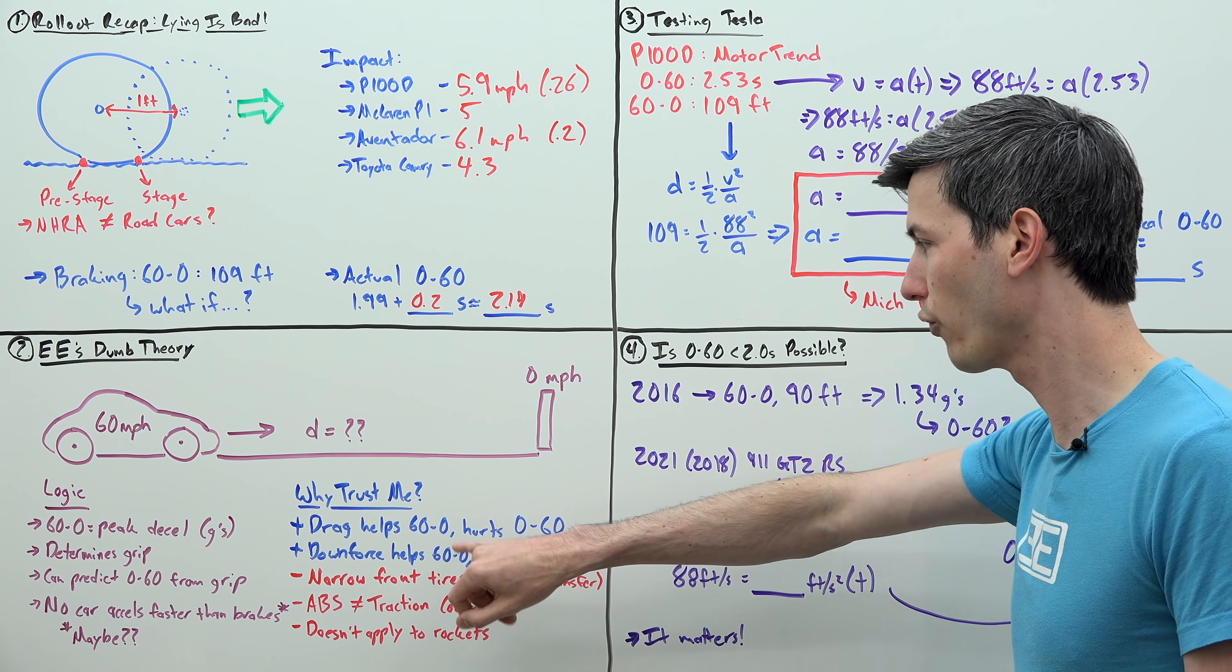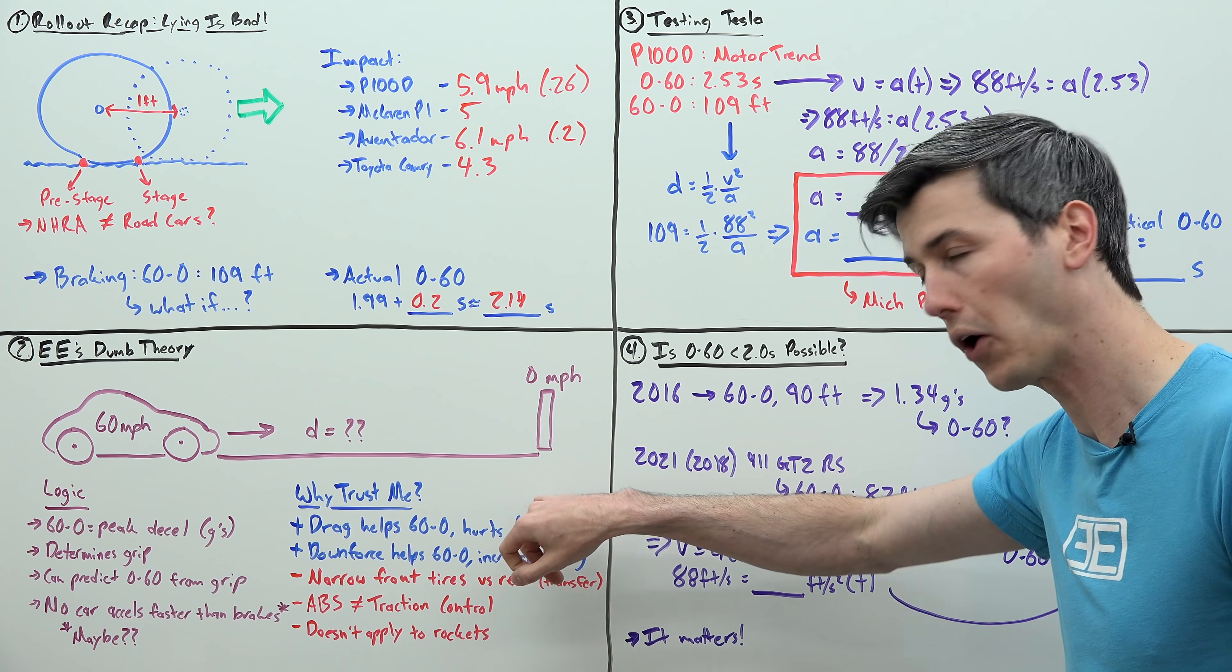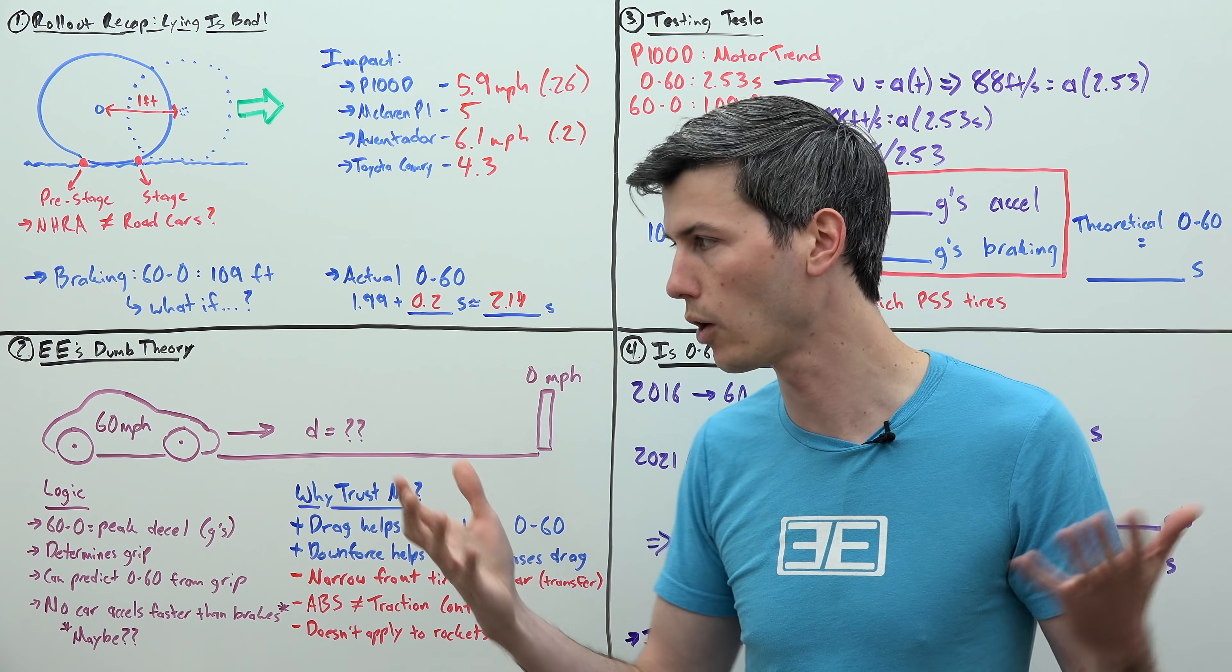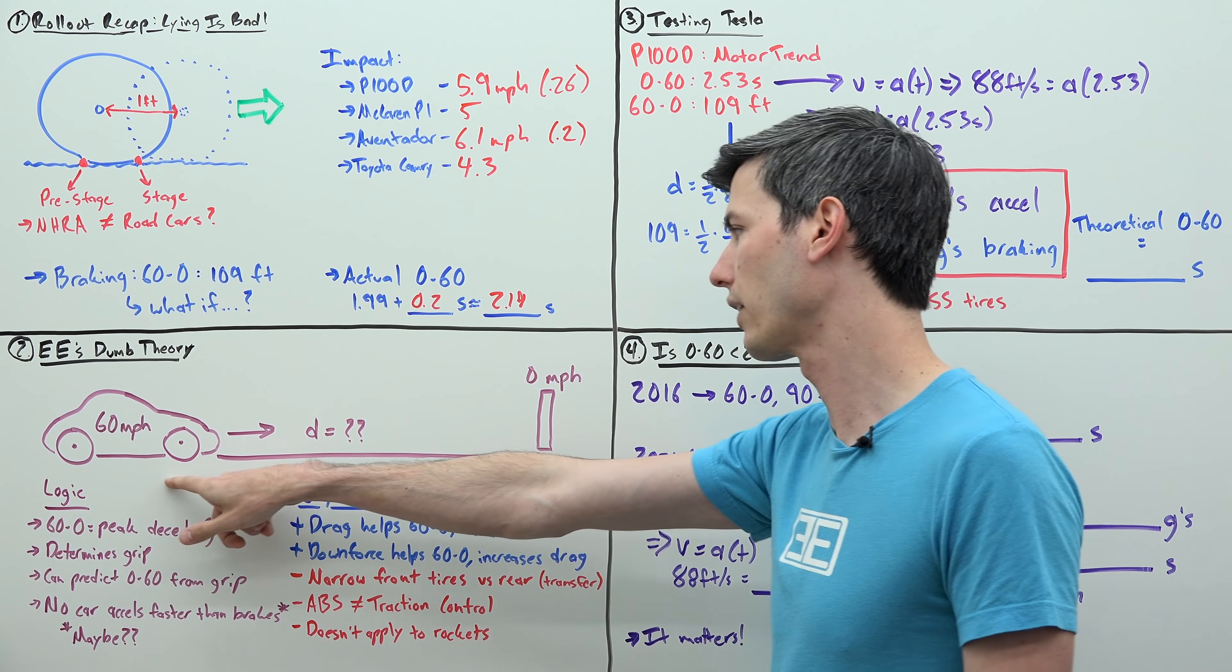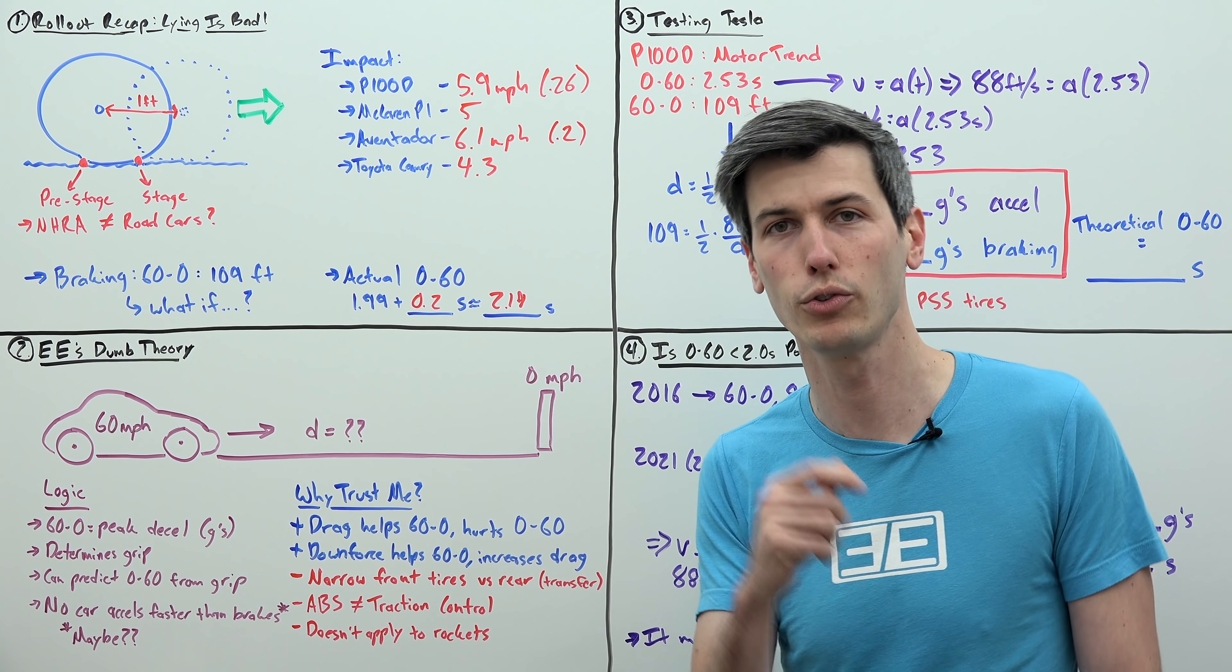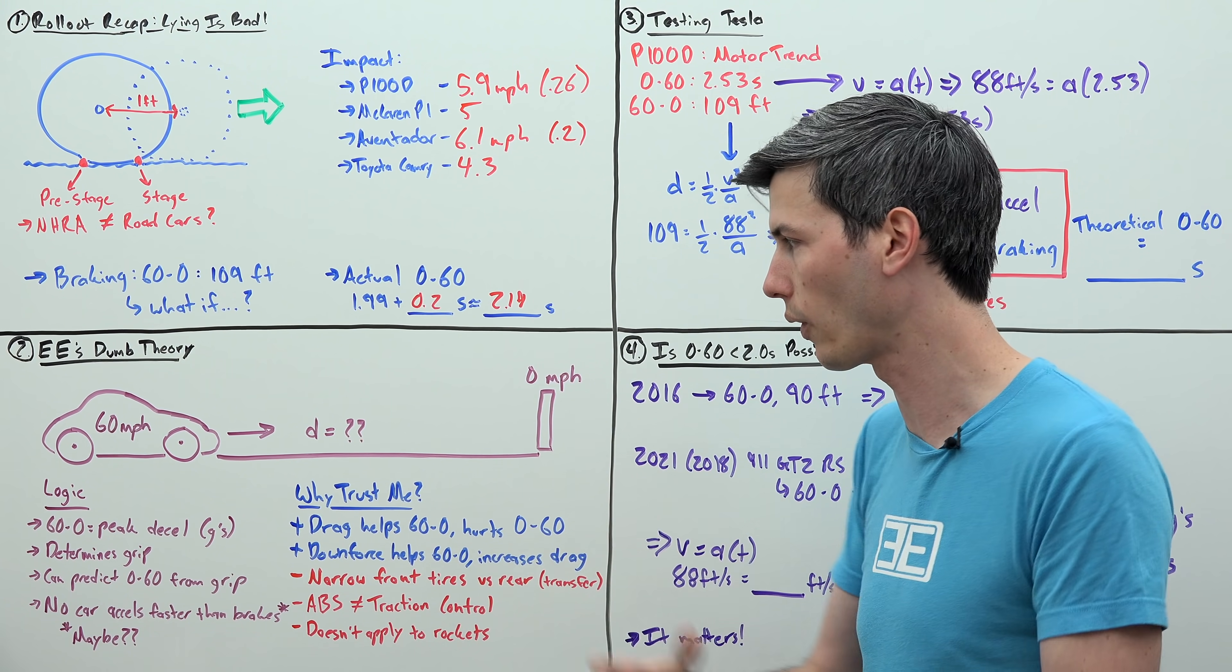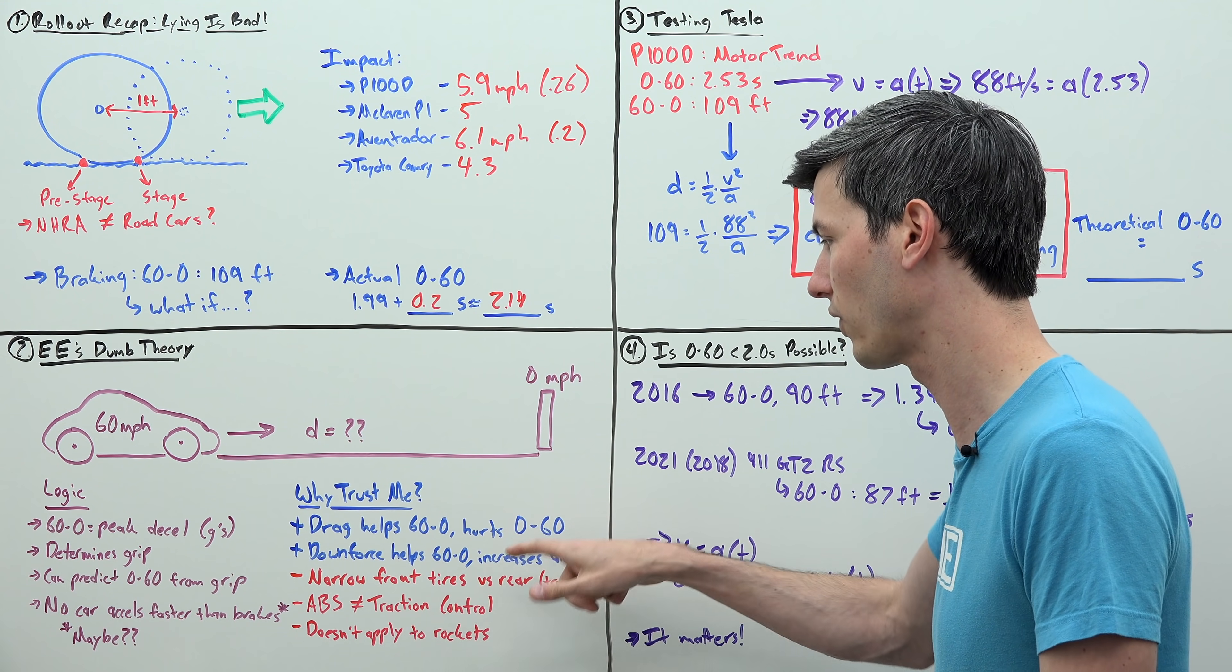And the reason being, I don't know of any car out there that can accelerate to 60 miles per hour faster than it can decelerate from 60 down to 0. It does not happen with road cars. So why should you trust that? Well, drag, first of all, helps reduce a 60 to 0 time, which means it would hurt your 0 to 60 time, because drag is helping to slow that car down. Aerodynamic drag starts to bring you to a stop. That's an advantage you do not have accelerating. The effect is small, right? 60 miles per hour isn't all that fast.